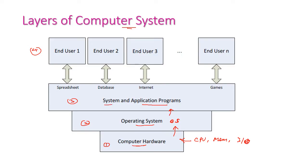On top of the operating system we have the application programs. We have two types: system programs and application programs. System programs are used to execute only the system components and system calls. Application programs are installed by the user based on their requirement. Different types of application programs include spreadsheets, databases, internet applications, games, and so on. These application programs will be used by the end user.